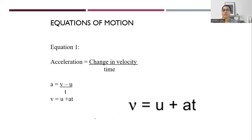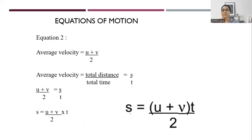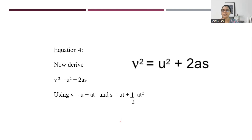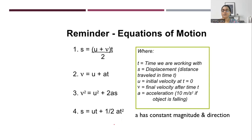Let's revise the equations of motion. The first comes from the definition of acceleration: a = (v - u)/t, rearranged to v = u + at. The second gives average distance: s = average velocity × time. The third is s = ut + ½at². The last is v² = u² + 2as. One important concept: equations of motion are always applicable for constant acceleration — constant in magnitude and constant in direction.